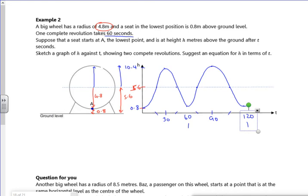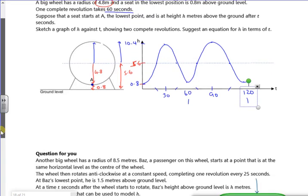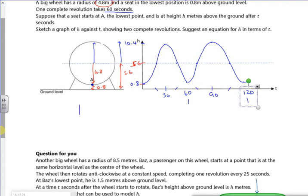Right. Suggest an equation for it. Awesome. Right. So let's have a think then. So we'll do a h for the height. So the centre line is at 5.6. So there's my centre line. My amplitude, my radius is 4.8.